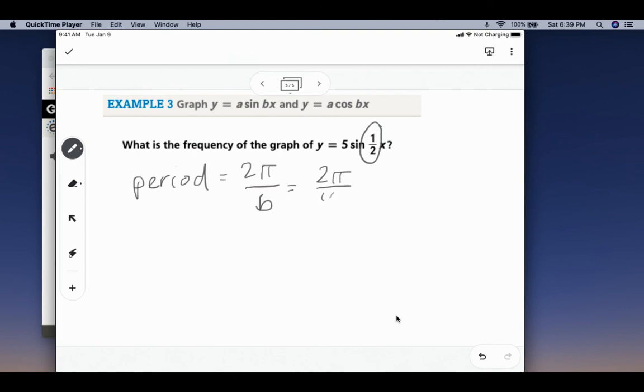Be careful here because sometimes we see 2 divided by 1 half and we think that's 1, but it's not. Think about how many 1 half pieces fit into 2, and it's 4. So this would be 4 pi. That means that the frequency would be 1 over 4 pi. It's the reciprocal of the period. So that means that you have 1 cycle of your graph in 4 pi angles.